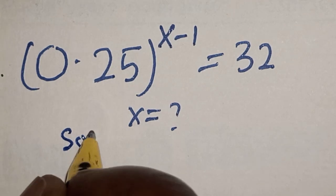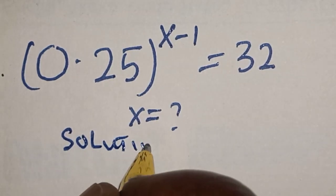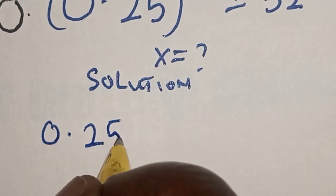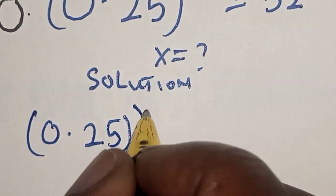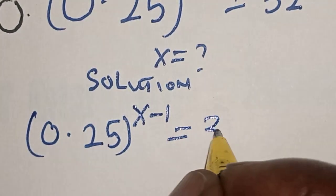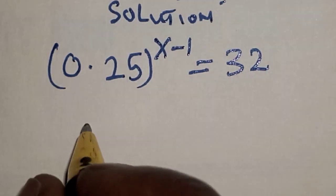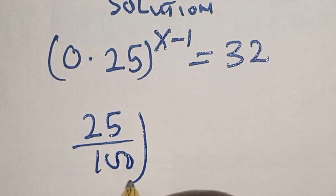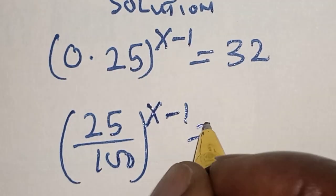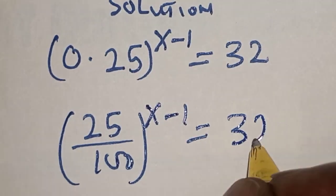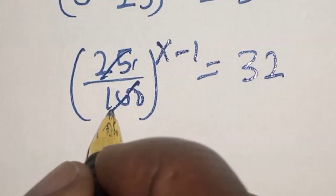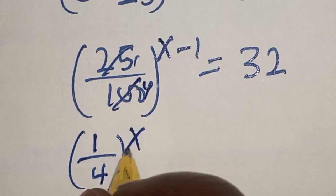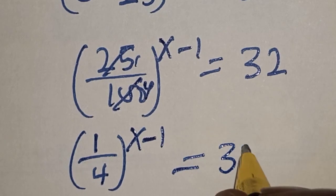Solution. We have the given equation: 0.25 raised to power s minus 1 is equal to 32. This is 25 divided by 100, raised to power x minus 1, is equal to 32. Simplifying, 1 divided by 4 raised to power s minus 1 is equal to 32.